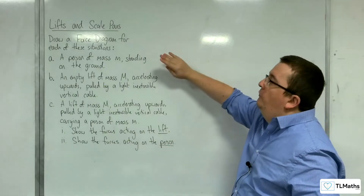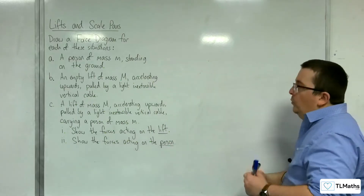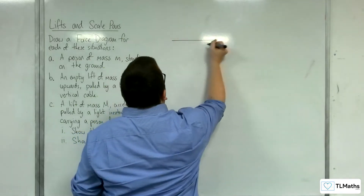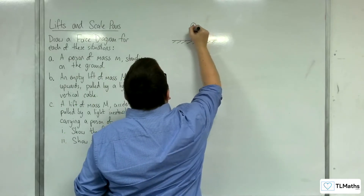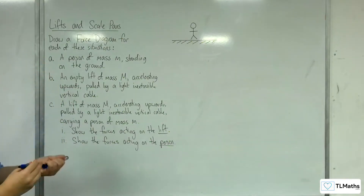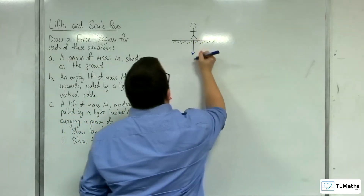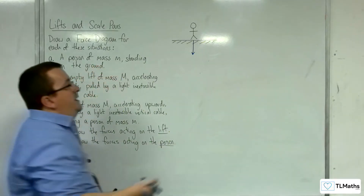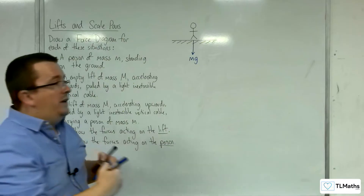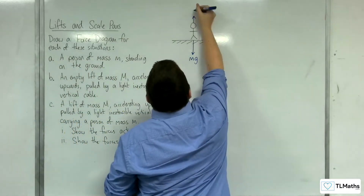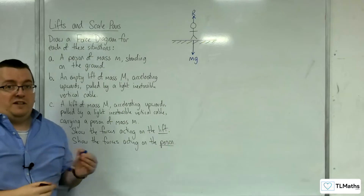We're going to start by drawing a force diagram for a person of mass m standing on the ground. The forces acting on that person are their weight acting vertically downwards, which is their mass m times gravity, so mg, and then there will be a normal reaction force because they're in contact with a surface, pointing directly upwards, which I'll label R.